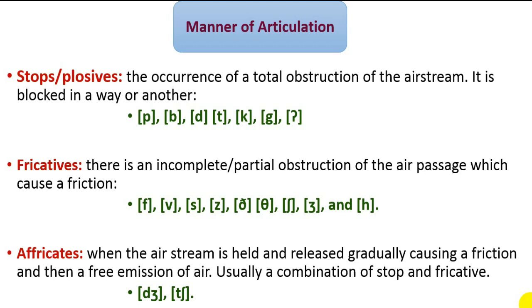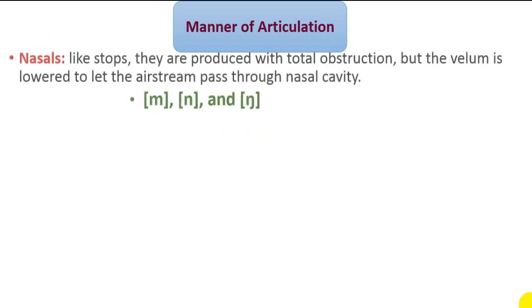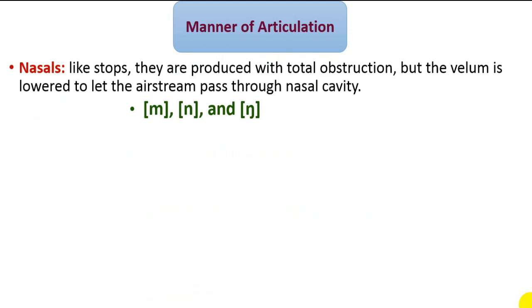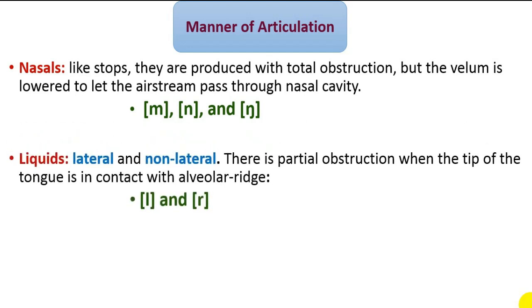Nasals: this feature characterizes consonant sounds that are produced with a total obstruction at a certain point in the vocal tract, like stops. But in the production of nasals, the velum is lowered to let the airstream pass through the nasal cavity. The nasal consonants in English are M, N, and NG.